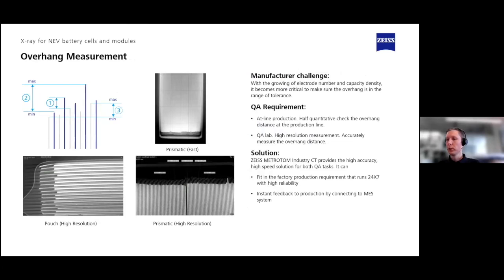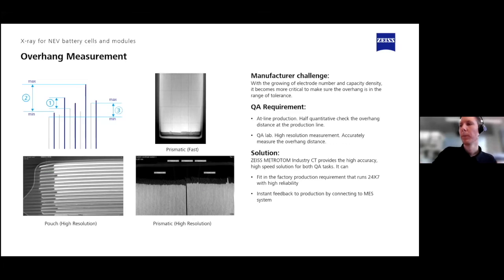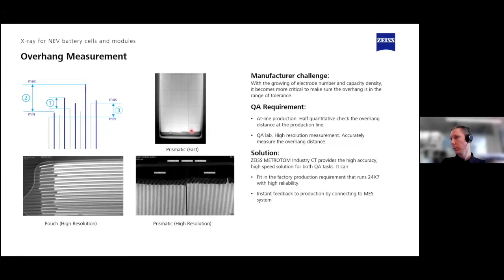Speaking about overhang measurement: CT is the only possibility to look inside your cell without opening it after production is finished. We can measure the distance from anode to anode, cathode to cathode, or anode to cathode, and it's important to know the minimum and maximum distances — this is a safety-critical issue. Depending on what stage of the process you're inspecting, you can scan with different parameters. With really high resolution, as seen here for pouch and prismatic cells, you get information about individual layers and can easily measure from one layer to the other.